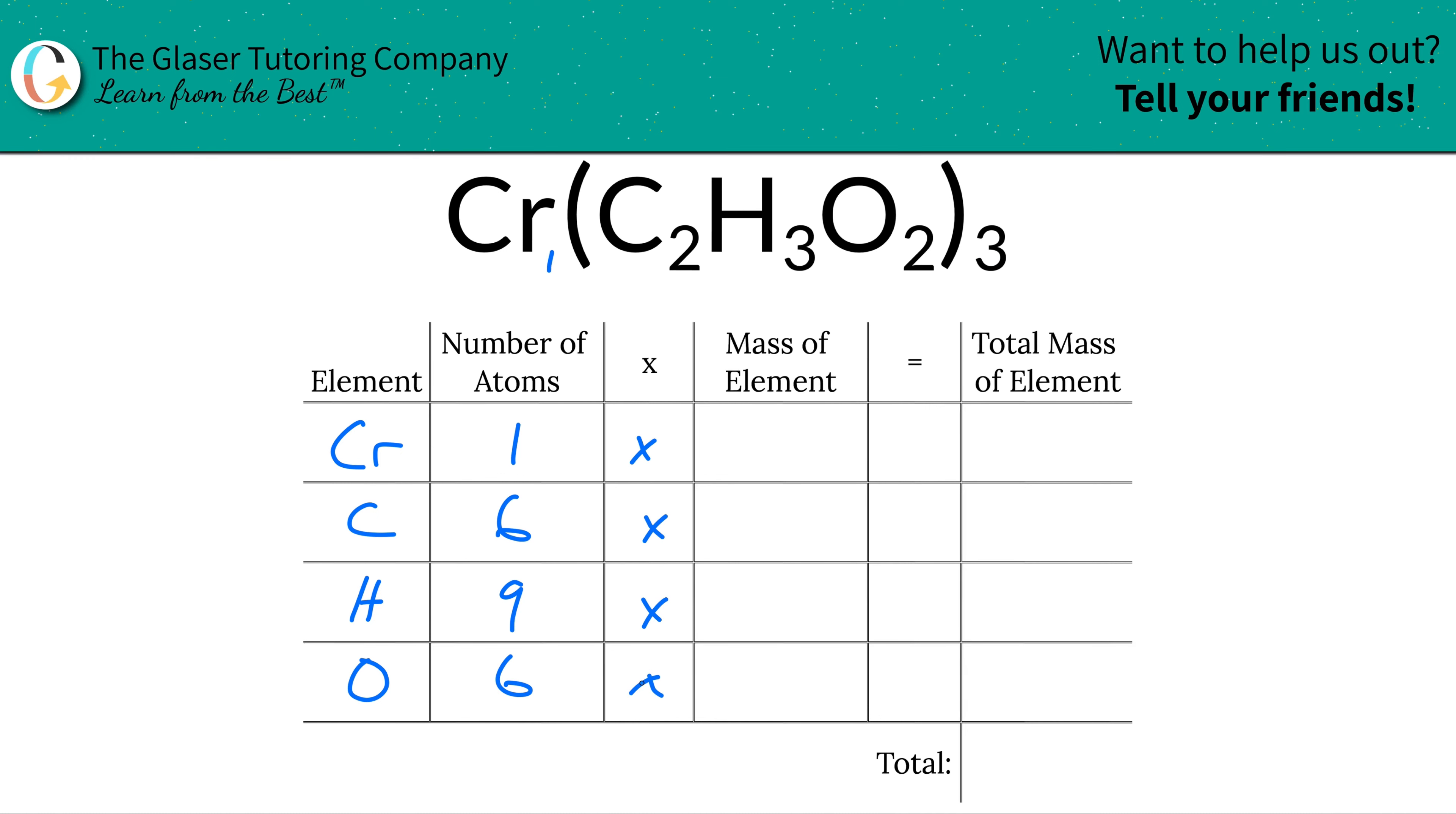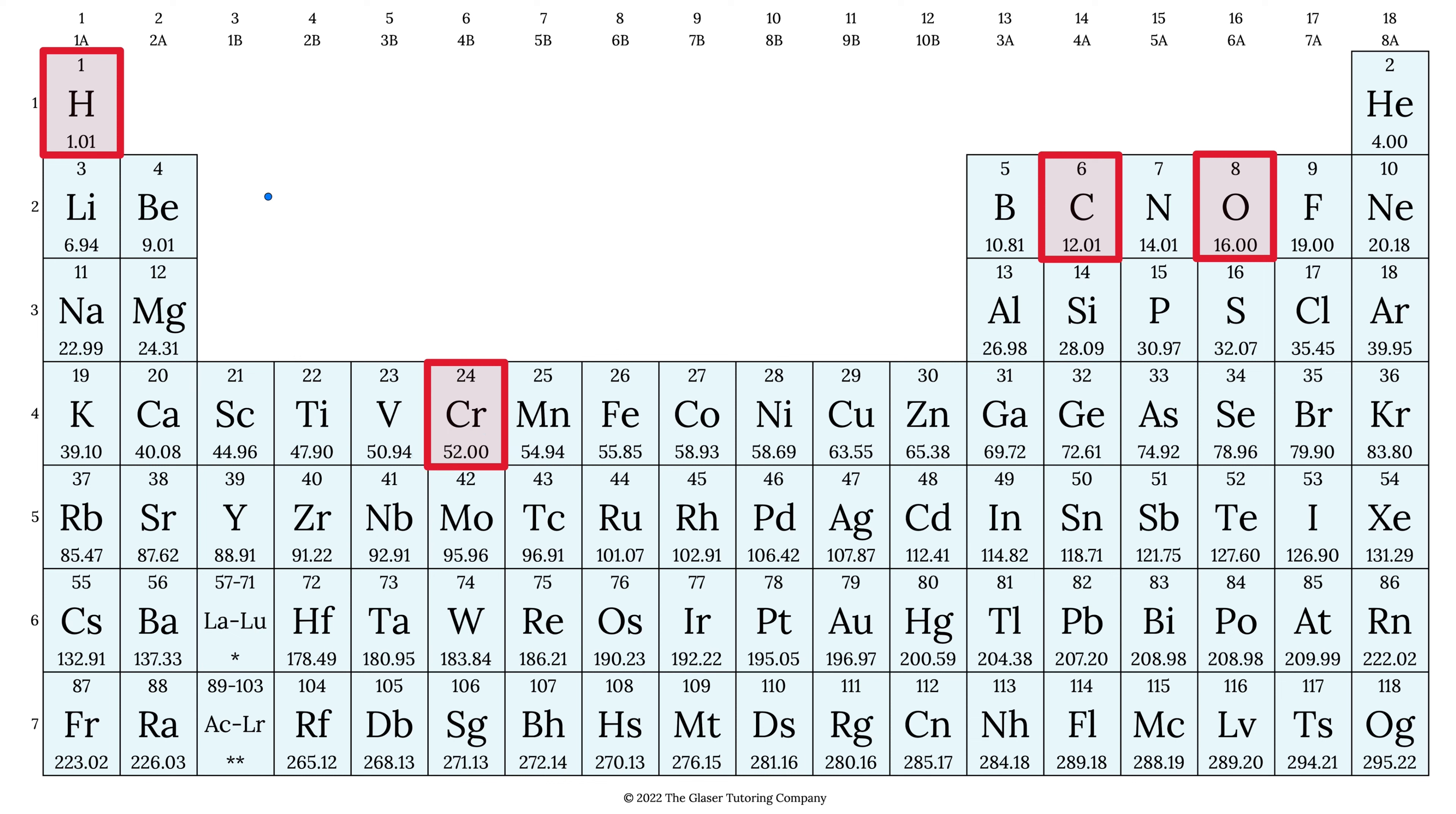Then we're going to take those number of atoms and multiply it by the mass of each element. Where do we find that? Periodic table. Here's all the masses: 52 for chromium, 1.01 for hydrogen, 12.01 for carbon, and oxygen is 16. Those masses represent molar mass in grams per mole or molecular mass in AMU.